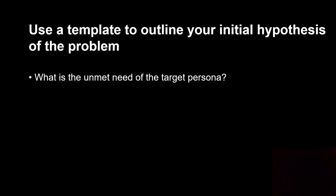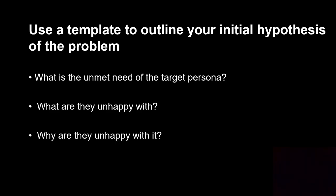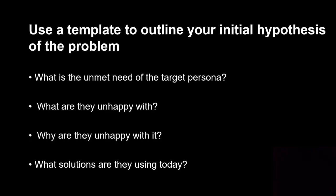An ideal way to do this is to use a very simple template to start to outline what you think the hypothesis is around the problem. What do you believe is the unmet need of that target persona? What are they unhappy with, and why are they unhappy with it? What is going on in their world — whether friction, a manual process, or something else — that's preventing them from getting to an end result faster, cheaper, or better?